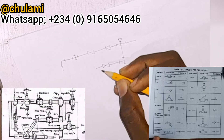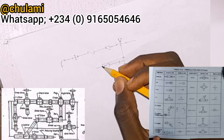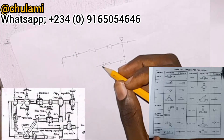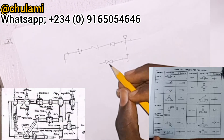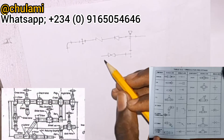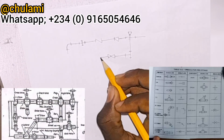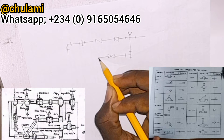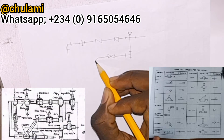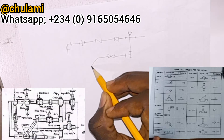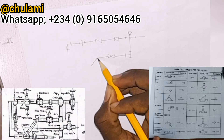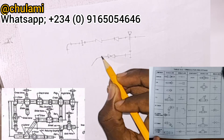Then continuing, you have a 45-degree elbow. For a 45-degree elbow you draw something like this — it has an angle of 45 degrees.